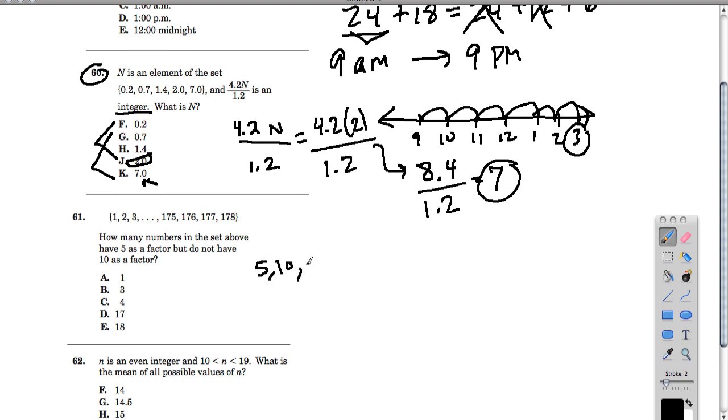Remember, 5s go 5, 10, 15, 20, 25, and so forth. And every other number is a multiple of 5. So all of these numbers have factors of 5, but not 10. So we can keep counting. We can keep doing this. Or we can try and look for a pattern. So far, I have 1, 2, 3, 4 numbers.